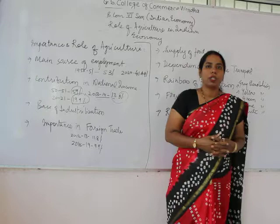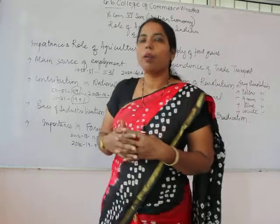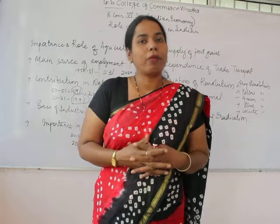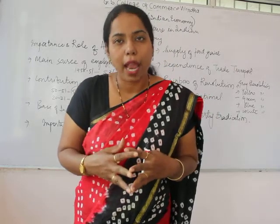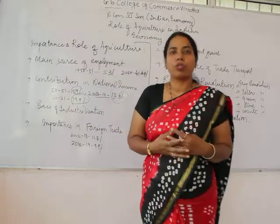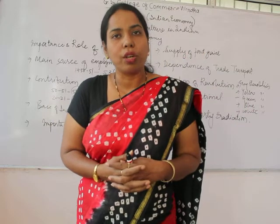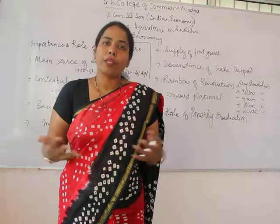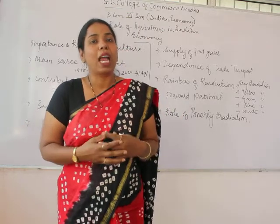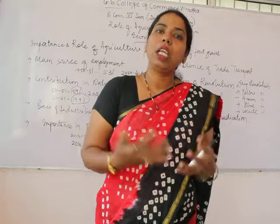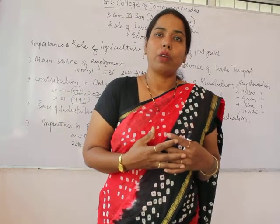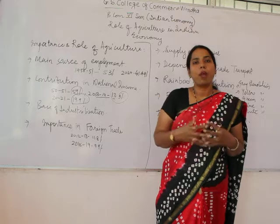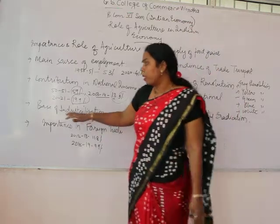The third aspect is that agriculture is the base of industrialization. Industries require different types of raw materials, and these are provided by agriculture. For example, the sugar industry gets sugarcane from agriculture fields. Similarly, the oil industry gets oil seeds from agriculture. Jute and cotton-based industries are totally dependent on agriculture for their raw material requirements. So for many industries, agriculture provides the foundational base.